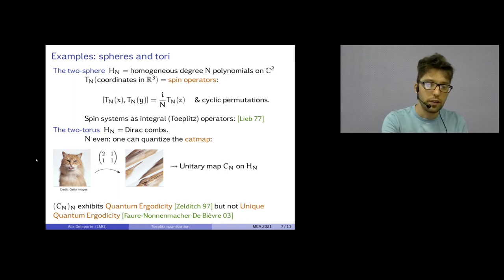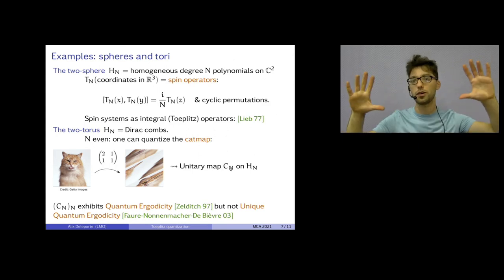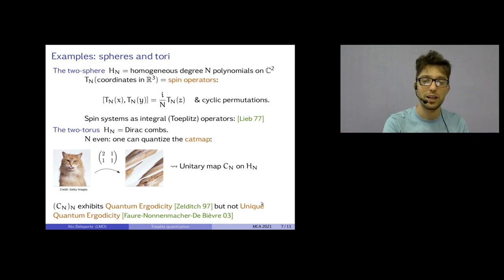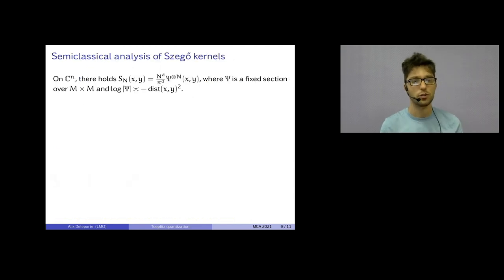Now, the classical picture is ergodic. So, Zelditch proved that Cn exhibits quantum ergodicity. So, almost all quantum eigenstates of this thing are spread around all over the torus. But, Faure, Nonnenmacher and De Bièvre have proved that, and it's one of the, in fact, very few examples where we know that it doesn't work. This system is not uniquely quantum ergodic. It's a natural framework when you can do simple computations and it's quite natural.